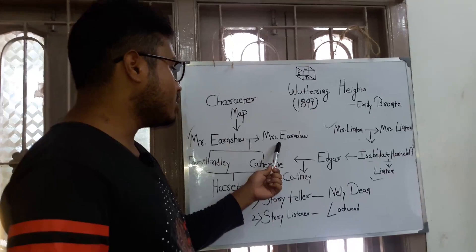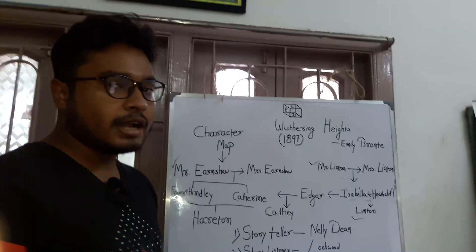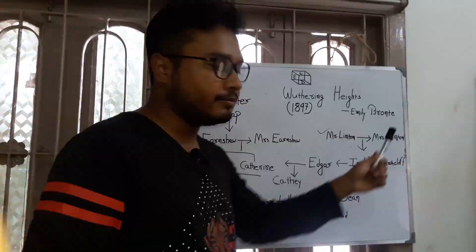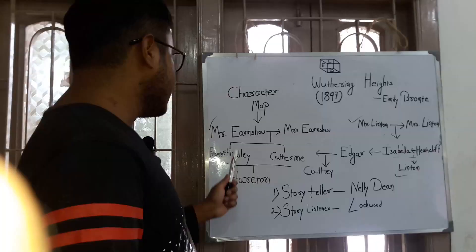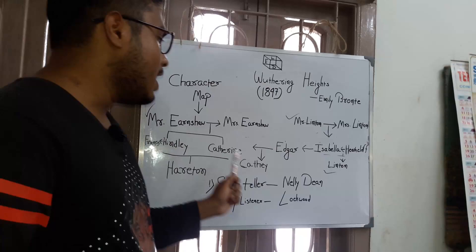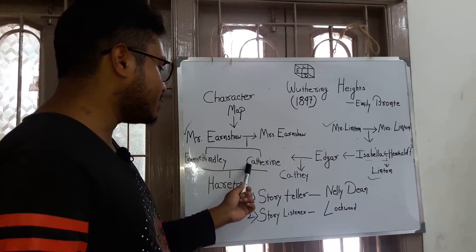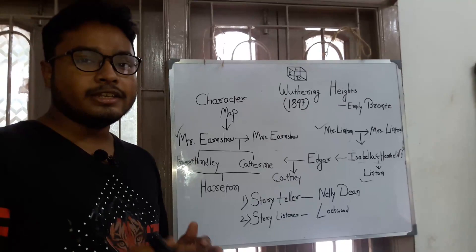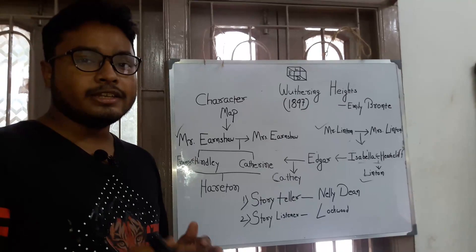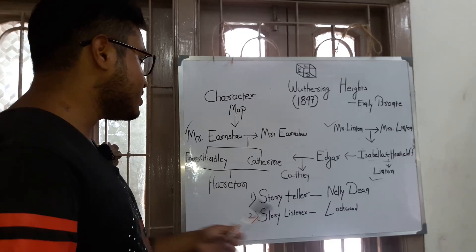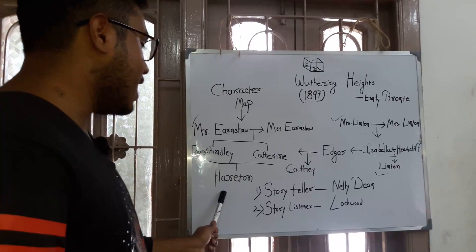There are two family pairs: Mr. and Mrs. Earnshaw, and Mr. and Mrs. Linton. Catherine and Hindley are the son and daughter of the Earnshaw family. Isabella and Edgar are the son and daughter of the Linton family. Hindley married Francis, Edgar married Catherine, and Heathcliff — the main protagonist — married Isabella. Hareton is the son of Hindley and Francis, Cathy is the daughter of Edgar and Catherine, and Linton is the son of Heathcliff and Isabella. The novel has three generations: first, Mr. and Mrs. Earnshaw and Mr. and Mrs. Linton; second, Hindley, Francis, Edgar, Catherine, Heathcliff, and Isabella; and third, Hareton, Cathy, and Linton.